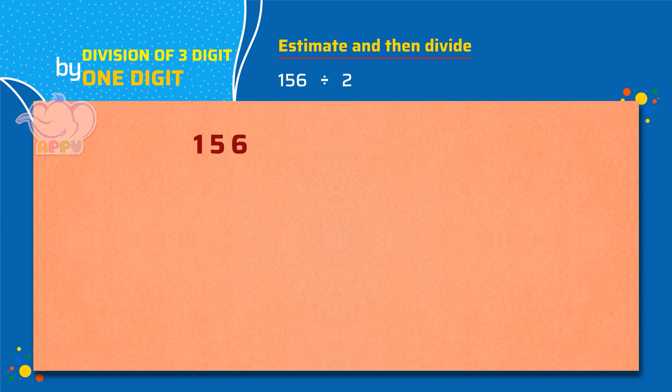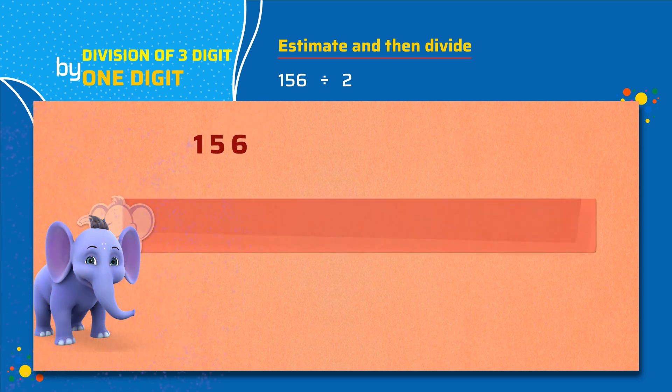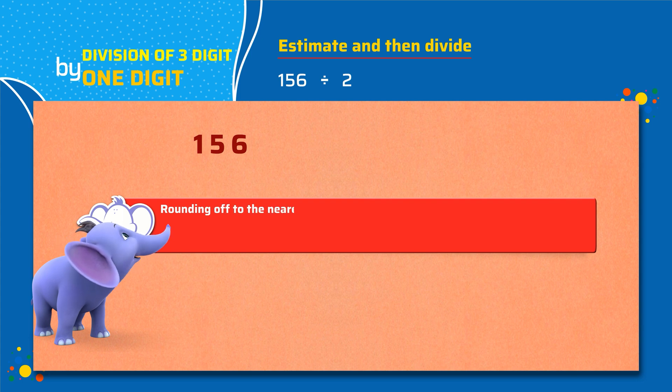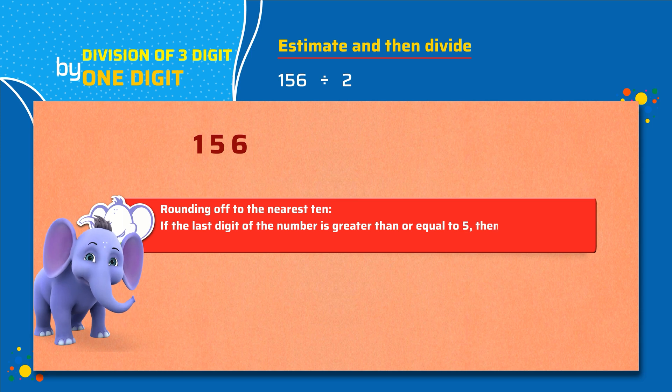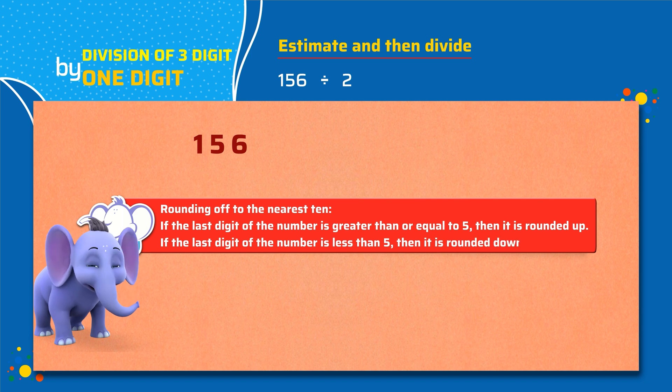Let's round off the number. Rounding off to the nearest ten. If the last digit of the number is greater than or equal to 5, then it is rounded up. If the last digit of the number is less than 5, then it is rounded down.